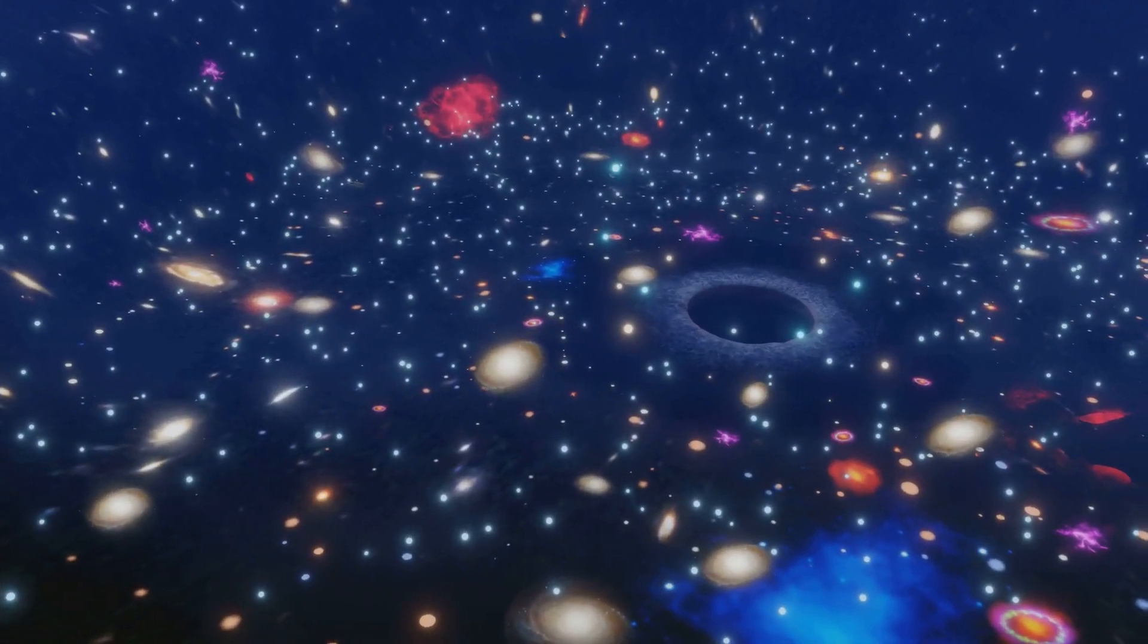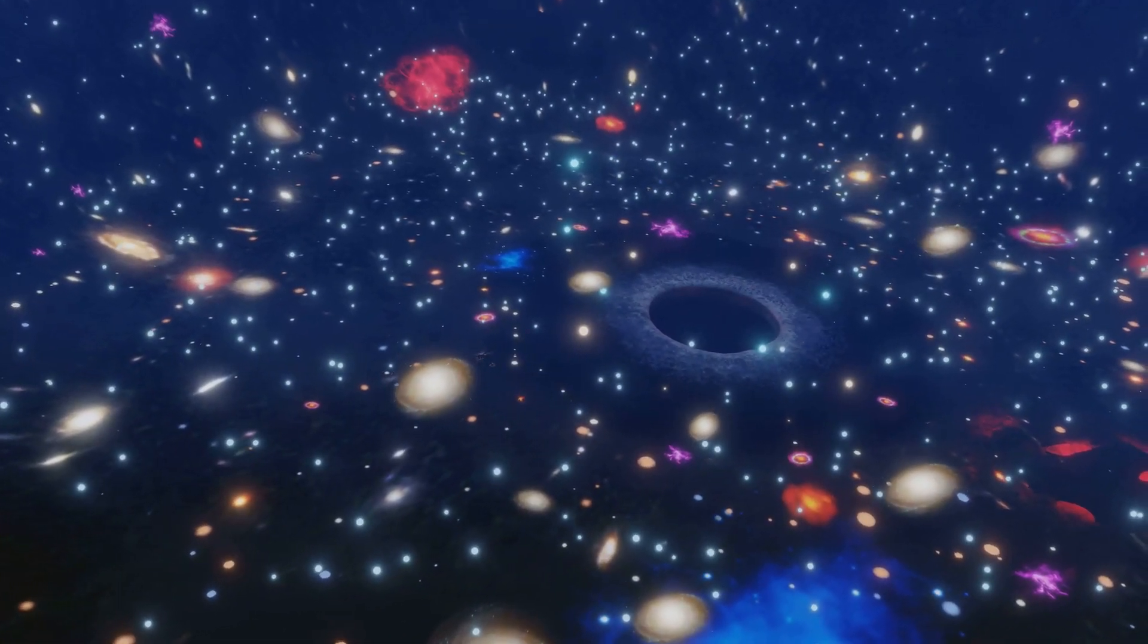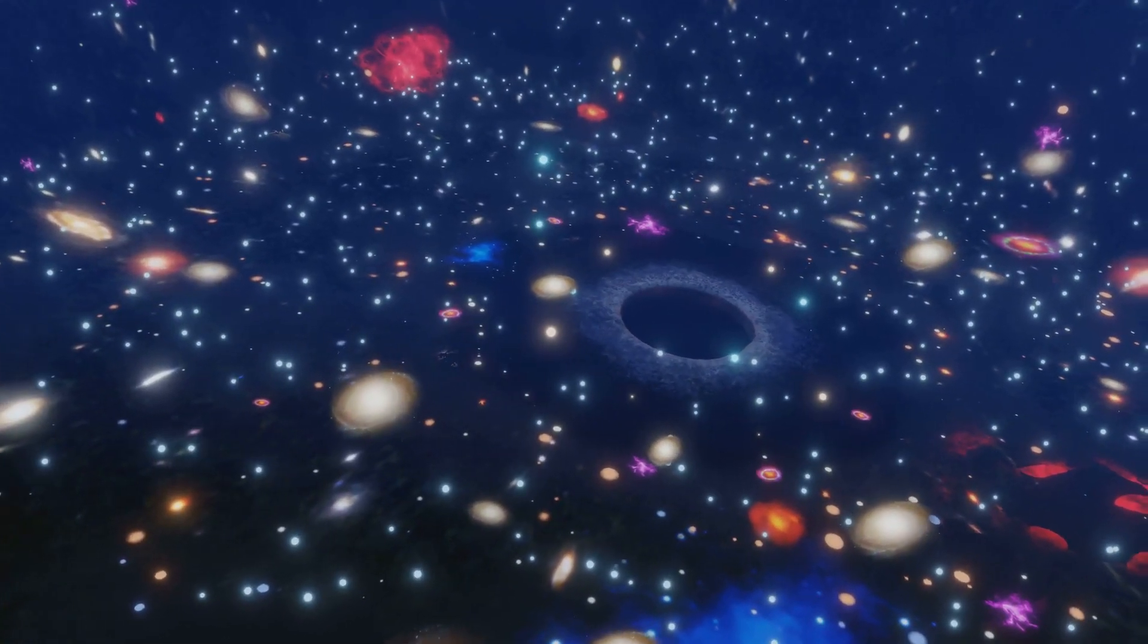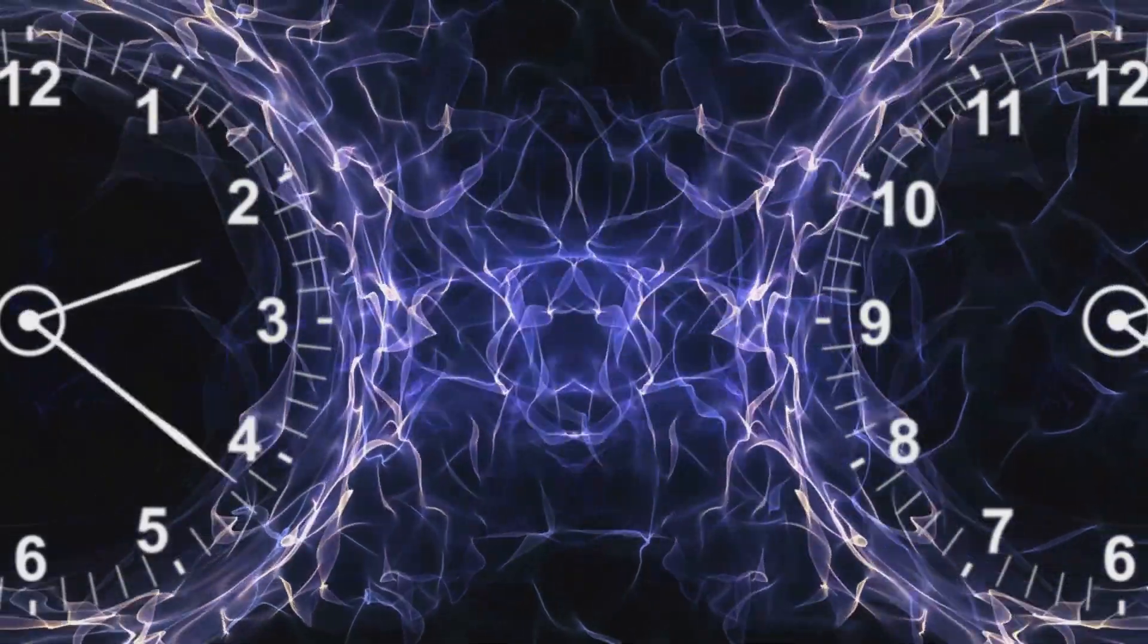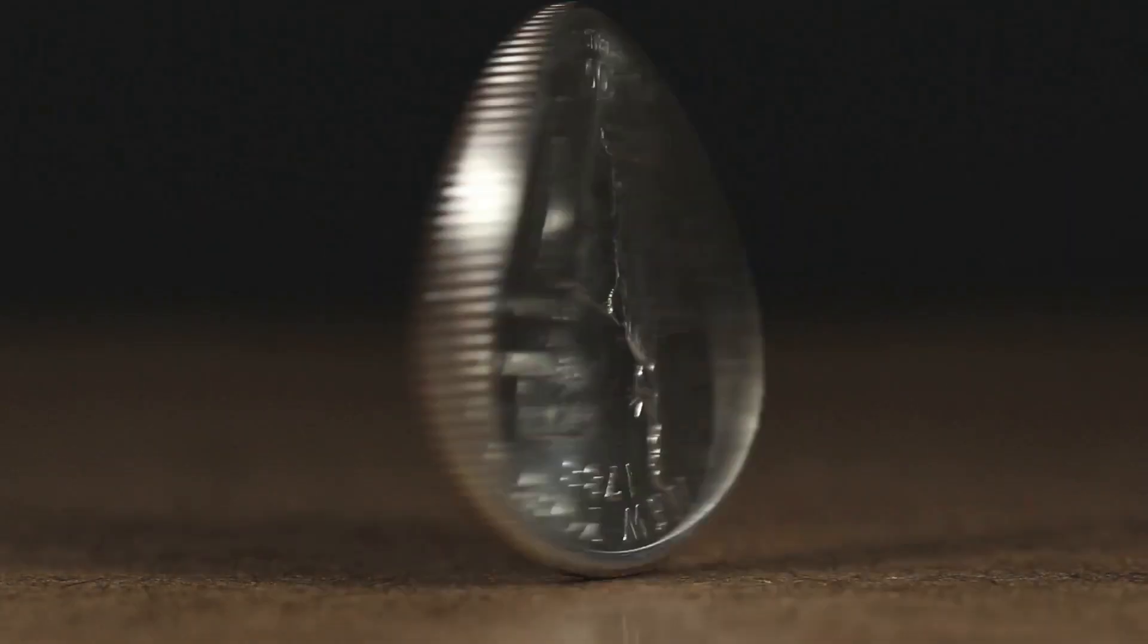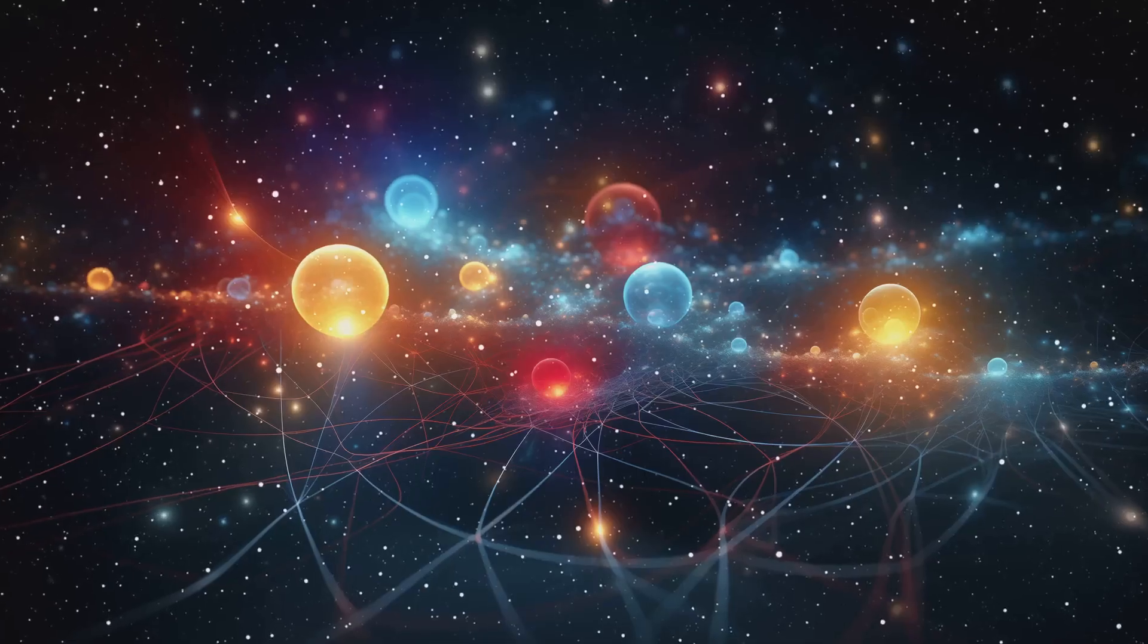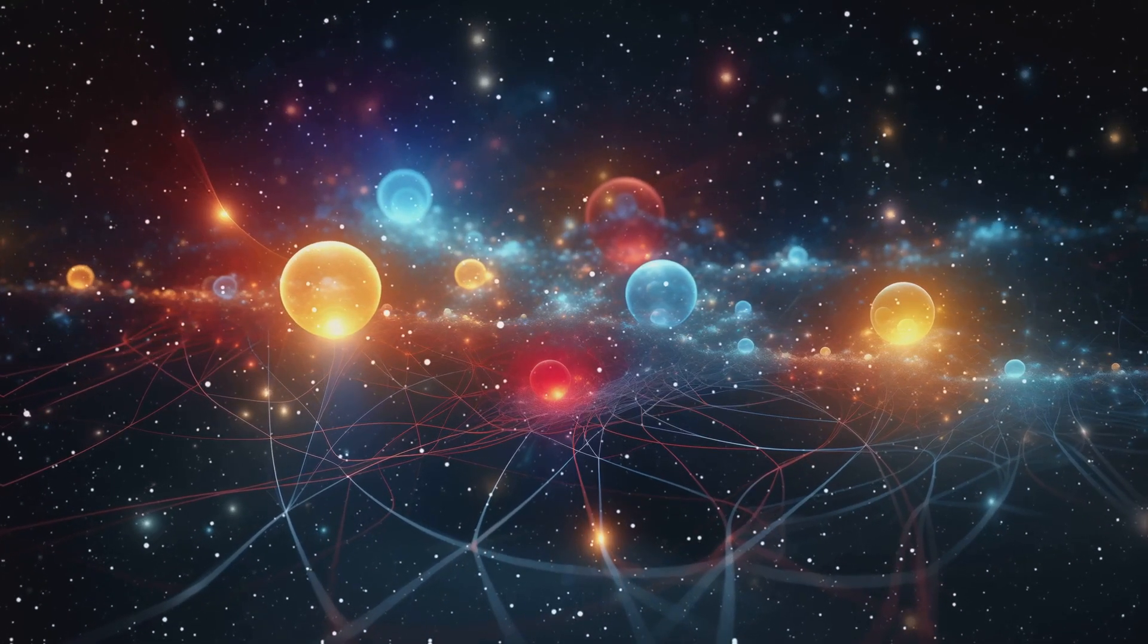General relativity explains gravity and the universe's structure, but at the subatomic level, quantum mechanics rules. In the quantum realm, time becomes fuzzy. Superposition allows particles to exist in multiple states until observed. This fuzziness has led to speculations about quantum time travel. Imagine a particle tunneling through a barrier, possible only in the quantum world. Could we manipulate quantum events to influence time?